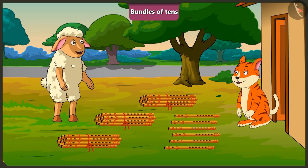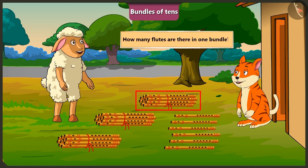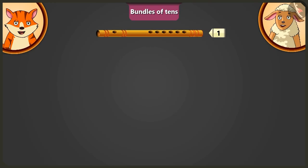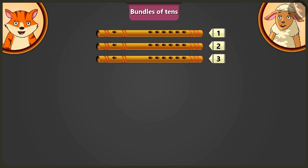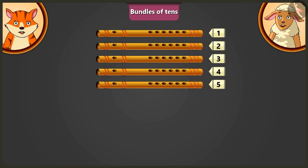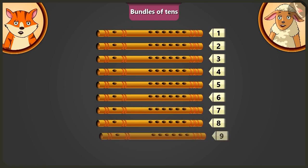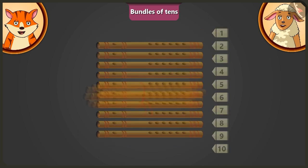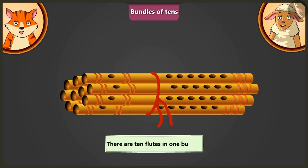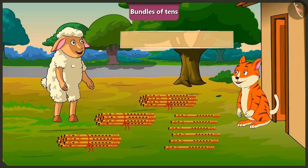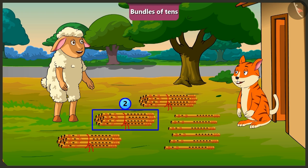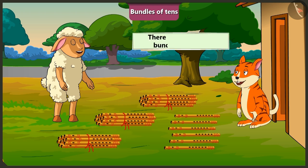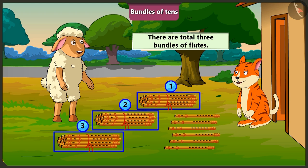Now, let us count these flutes. Billy, how many flutes are there in one bundle? 1, 2, 3, 4, 5, 6, 7, 8, 9, 10. One bundle here has 10 flutes. How many bundles of flutes are there in total? 1, 2, 3. There are total 3 bundles of flutes.